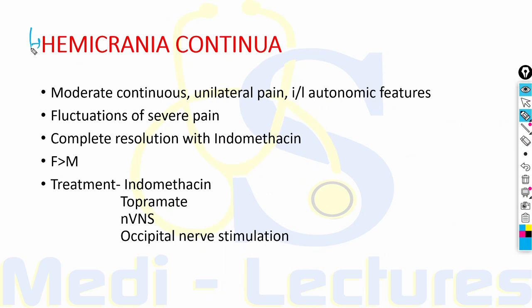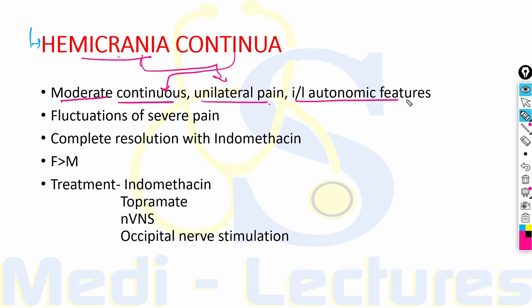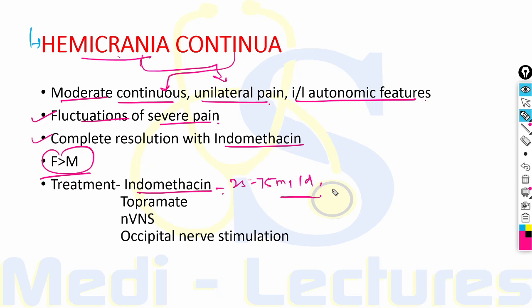The last type in TACs is hemicrania continua — a moderate continuous unilateral pain with ipsilateral autonomic features. There can be fluctuations of severe pain in between. Complete resolution is seen with indomethacin, and females are more commonly affected. Treatment is indomethacin 25 to 75 mg/day, and 100 mg IM injection of indomethacin is used for making the diagnosis. Other useful drugs include topiramate. Non-invasive vagal nerve stimulation and occipital nerve stimulation can also be used.